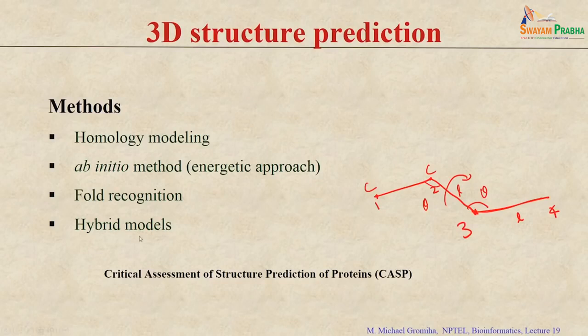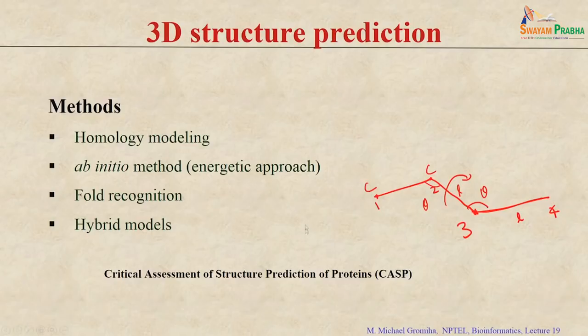Recently, several hybrid methods have been developed that combine different techniques. Where significant similarity or homology exists, homology modeling is used; where sequence identity is less, ab initio modeling is applied, and everything is combined using energy minimization. The ability of these techniques is assessed by a competition called CASP — Critical Assessment of Protein Structure Prediction — conducted once every two years.